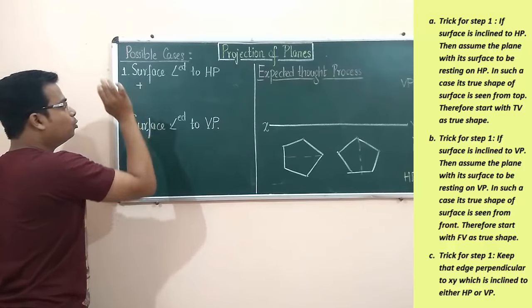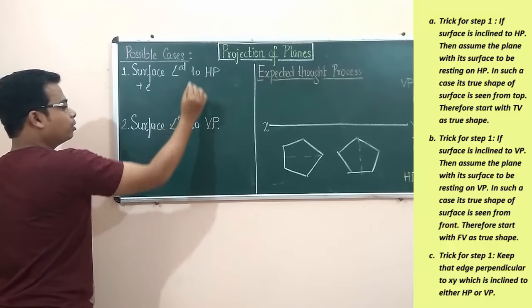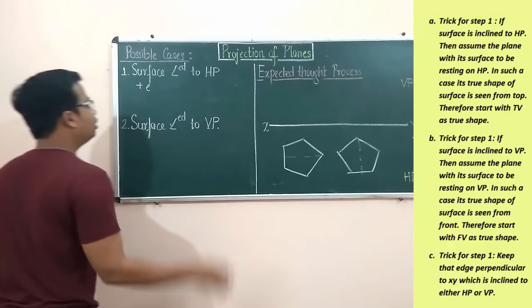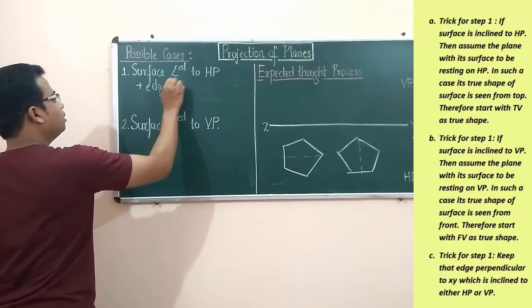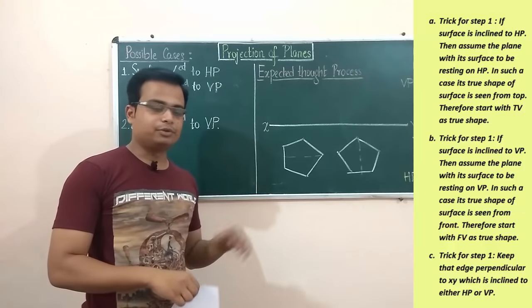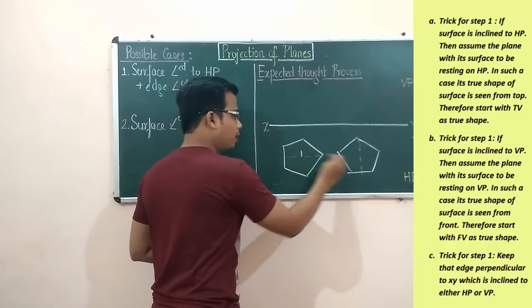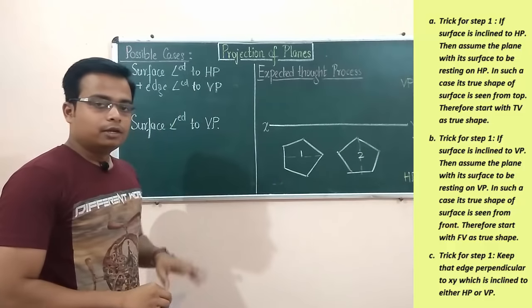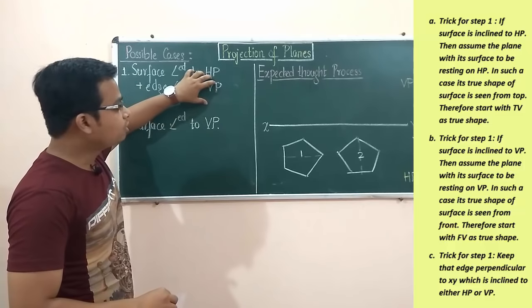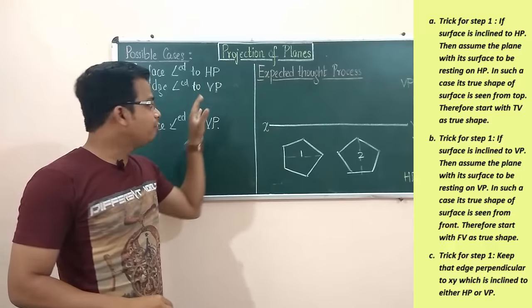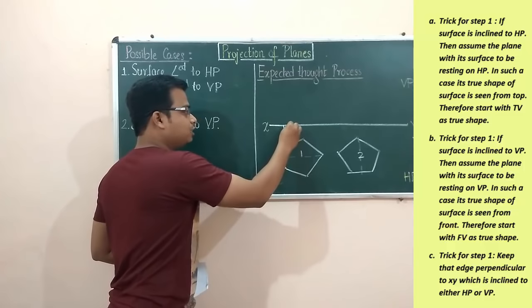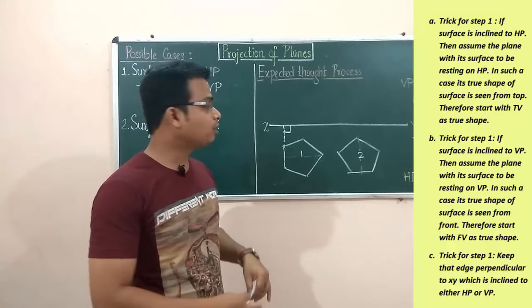Now let me add one more condition: surface inclined to HP plus edge inclined to VP. There is a confusion whether to choose option one or option two. Remember this — whenever edge is inclined to VP, and edge inclination happens in step three, always make sure that in step one that edge has to be kept perpendicular to the XY line.